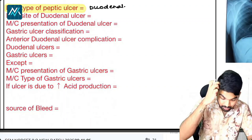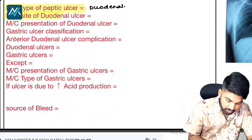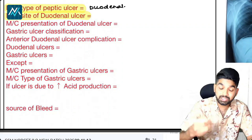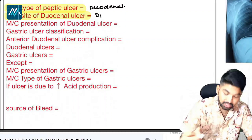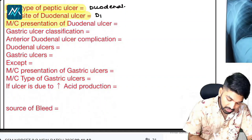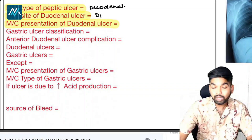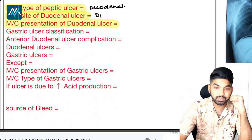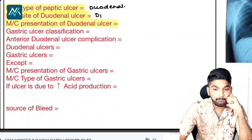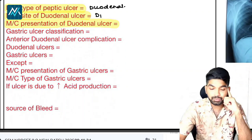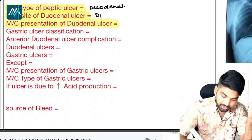What is the most common site for duodenal ulcer? You can answer as D1. And what is the most common presentation of duodenal ulcer? Excellent — bleeding.